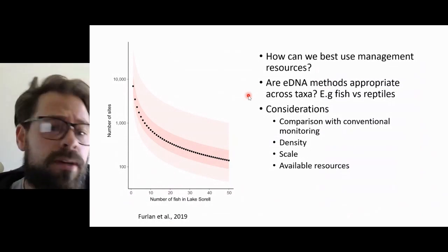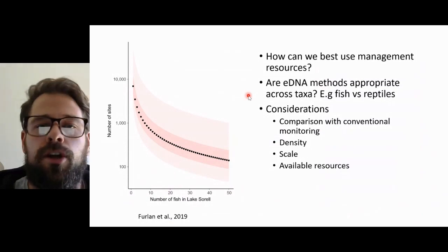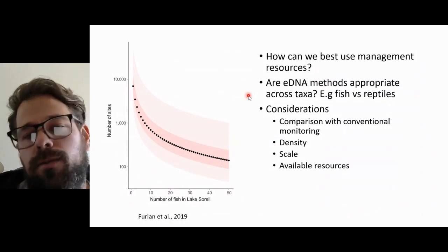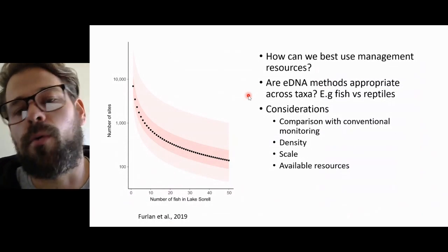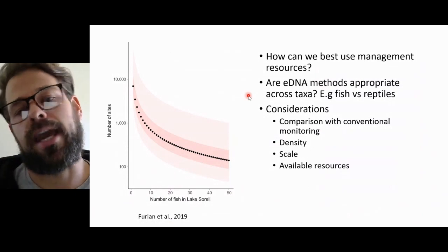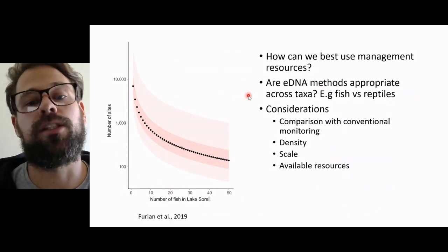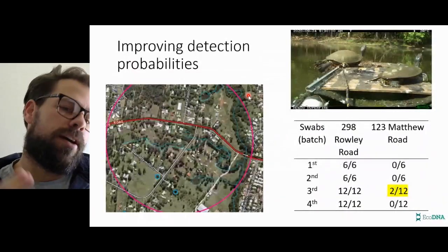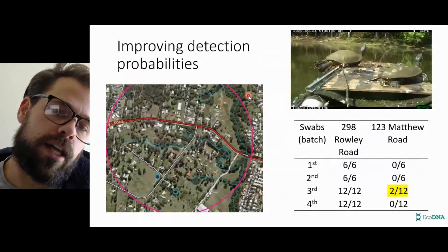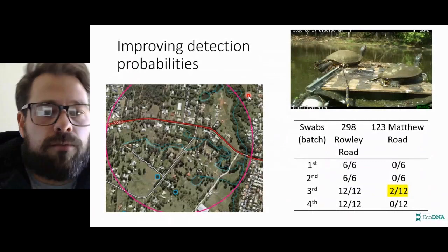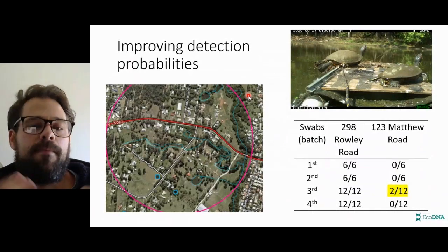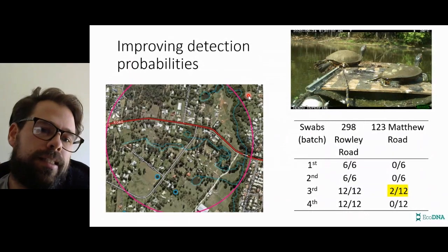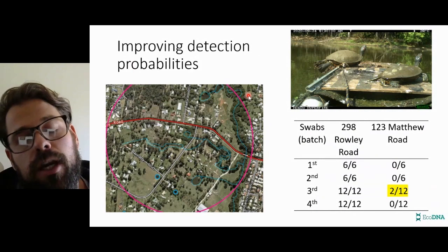Some considerations from this would obviously be how we can compare this with conventional monitoring, understanding the density and scale we're working with, and the available resources. And so I was thinking about how could I improve detection probability, and what we came up with was to use swab sampling.